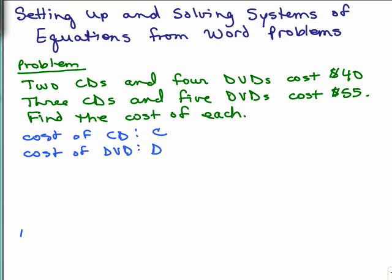Let's look back at the sentence. Two CDs and four DVDs cost $40. If each CD costs C dollars, two of them will cost 2C. But you want to add that to the cost of four DVDs. Each DVD is D, so that's 4D. And all together it says that costs $40.